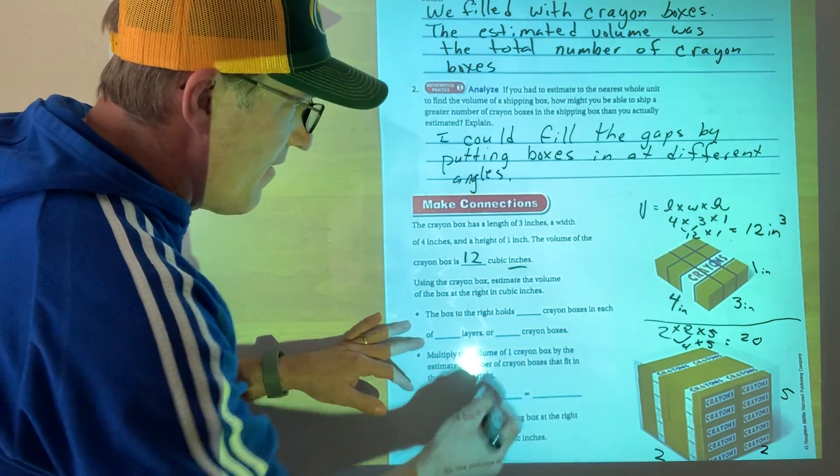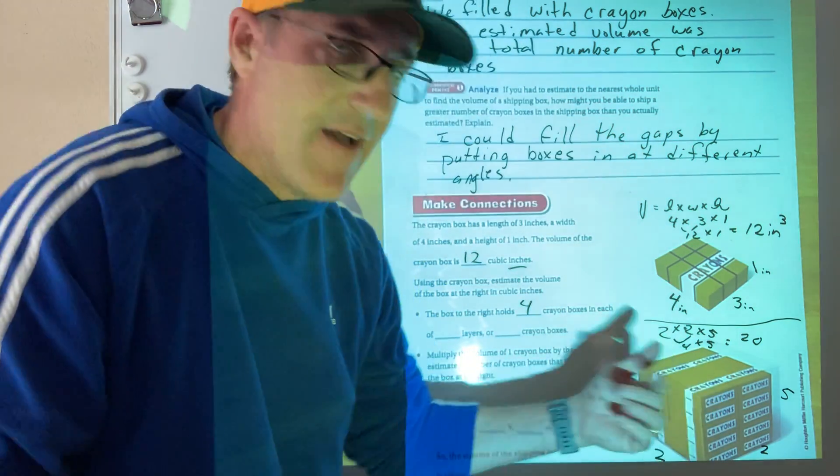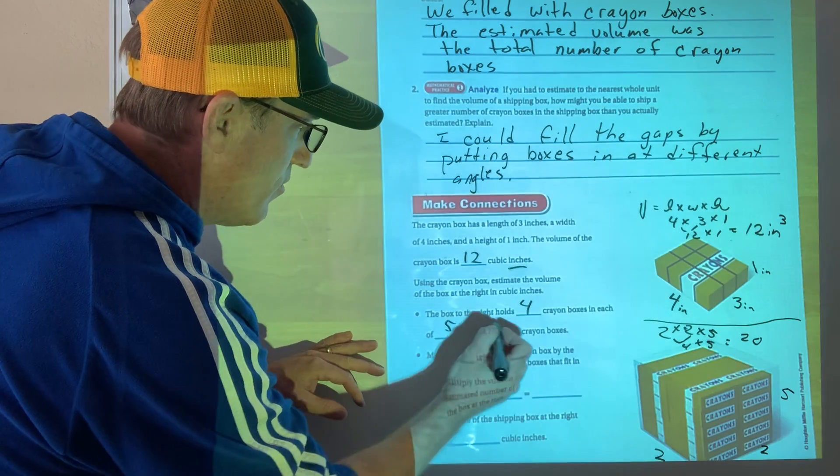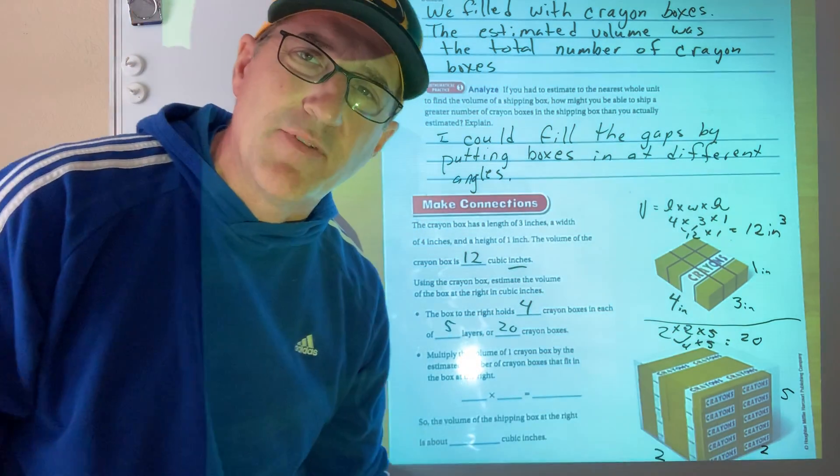So I've got four cram boxes in each of how many layers? One, two, three, four, five. Five layers, which is of course 20 cram boxes. Did I get the same number? Yeah, I'm just multiplying those out.